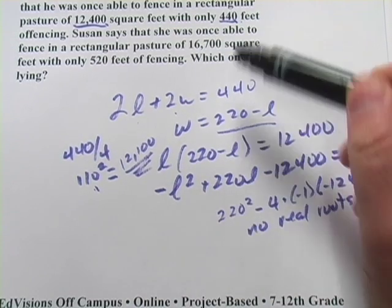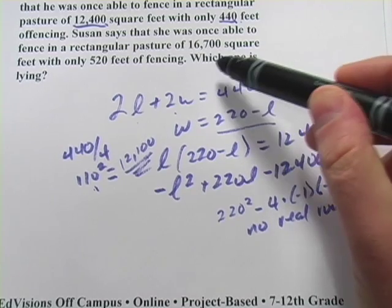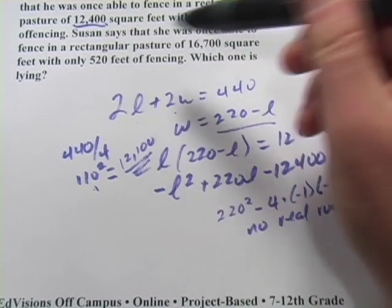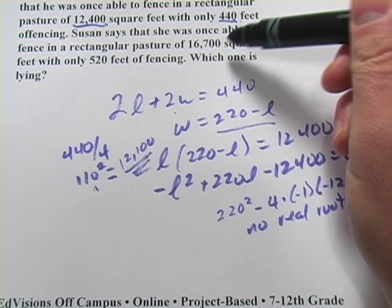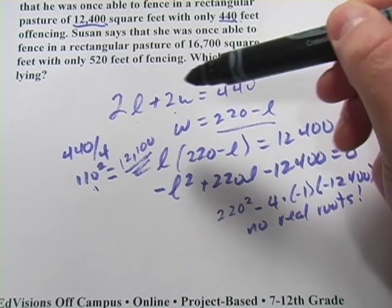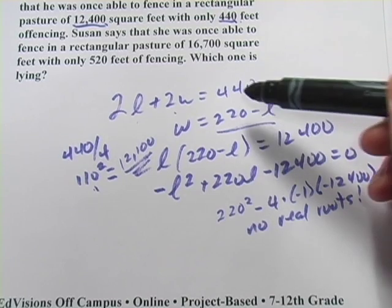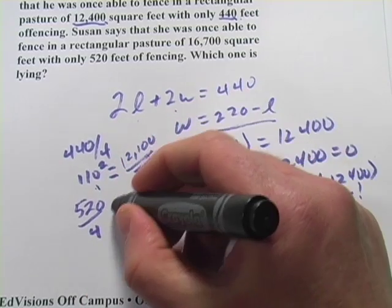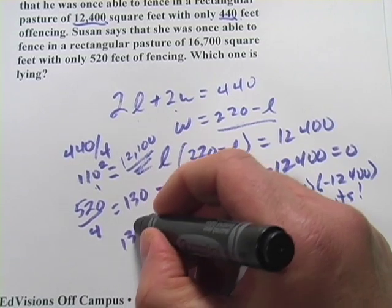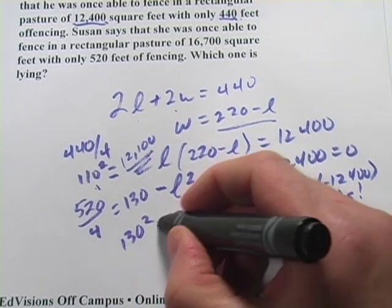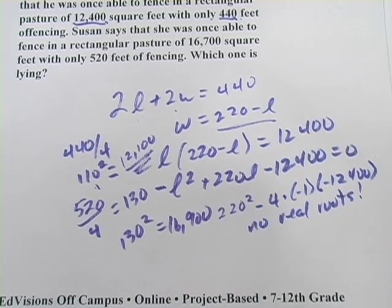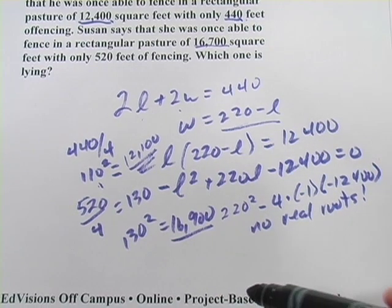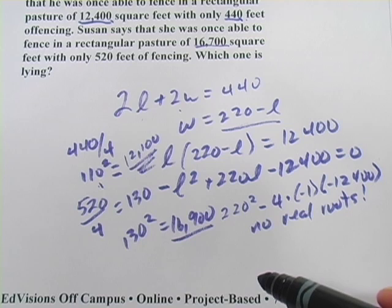Now, let's check Susan's too. We found out Bob was lying and from the way the question is phrased, it says which one is lying. But we want to double check, maybe it's a trick question. Susan says she was able to fence in a rectangular pasture of 16,700 with 520 feet of fencing, you can do the same thing, make the quadratic with the perimeter and the area equations, or let's just do our shortcut. 520 divided by 4, that's 130, and 130 squared is 16,900. So if she had done this the most efficient way, she could get 16,900. She's only claiming 16,700, so it's definitely possible that she would be able to do that.